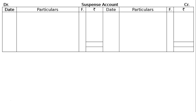Prepare the suspense ledger and write down the opening balance. It is given in the question itself that the suspense account was opened with a credit of Rs.8930. This amount will be the balancing figure, found by balance brought down of Rs.8930. You have to first post all the amounts in the suspense account to find out the difference towards the end, then post the journal entries into this suspense ledger.